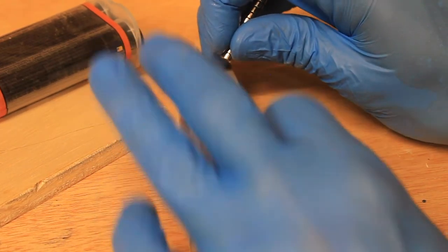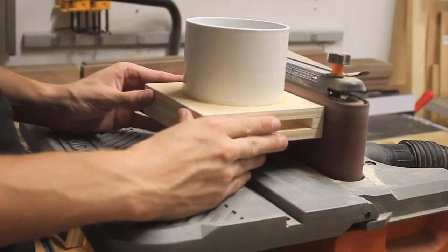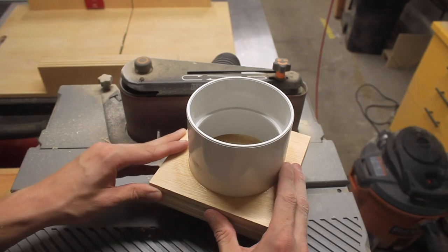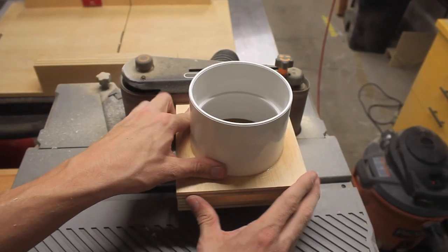With everything dry, I flushed up all the edges of the housing on the belt sander and rounded my edges. If your magnets are slightly proud, you can also sand these down at the belt sander for a perfectly flush fit.